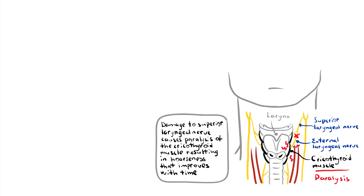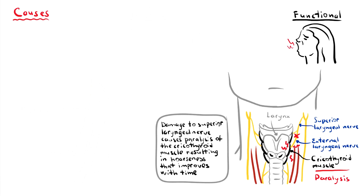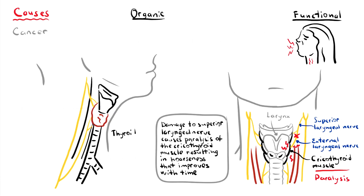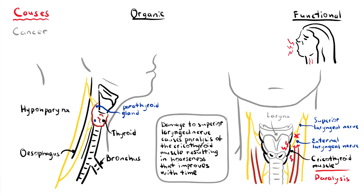However, it is important to remember other differential diagnoses of hoarseness, which can be divided into organic or functional causes. Functional causes include overuse or abuse of the voice. Organic causes include cancer invading the laryngeal nerves. A good proportion of laryngeal nerve palsy is due to cancer, which can be of the thyroid, esophagus, bronchus, or hypopharynx. These can cause compression of the laryngeal nerve, leading to hoarseness.